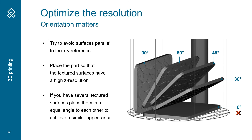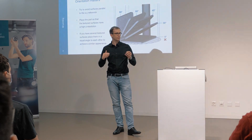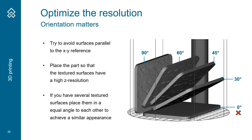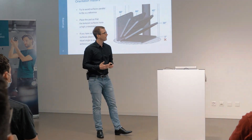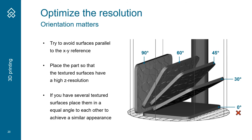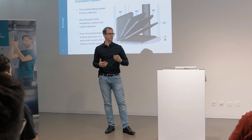To summarize the design rules: number one, try to avoid flat textures on the powder bed because you get a low-resolution appearance. Number two, place them at a high-resolution orientation even if it takes more powder and the printing process takes a bit longer. Number three, if you have several faces at different angles, try to place them equally so that the appearance has a similar look.